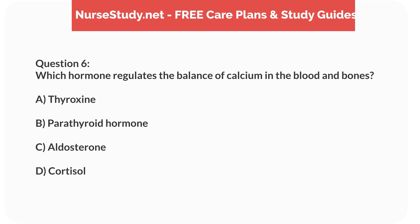Question 6. Which hormone regulates the balance of calcium in the blood and bones? A. Thyroxine. B. Parathyroid hormone. C. Aldosterone. D. Cortisol.